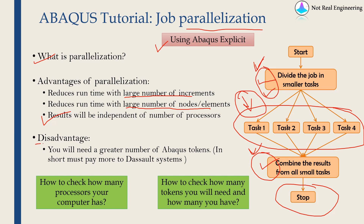There is one disadvantage of Abaqus parallelization: when you run a job on more than one processor, you need more Abaqus tokens. Abaqus tokens are related to Abaqus licensing, and in short, this means you have to buy more tokens from Dassault Systèmes, so you end up paying more. That seems fair because you are saving time.